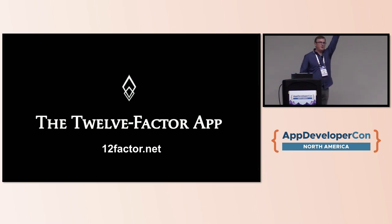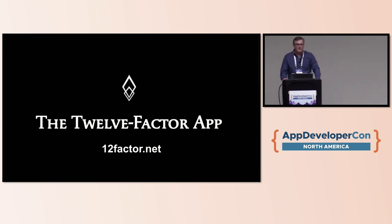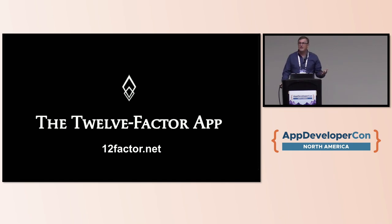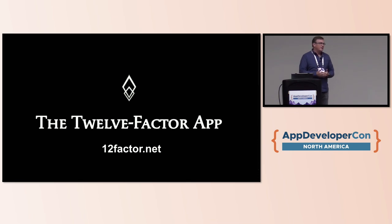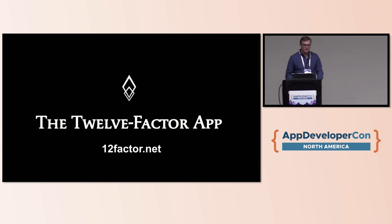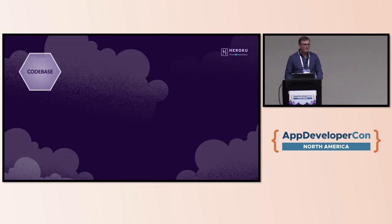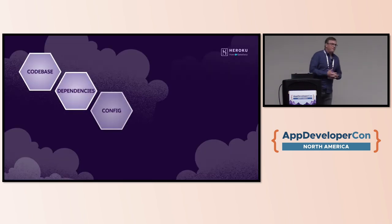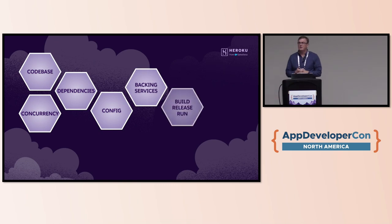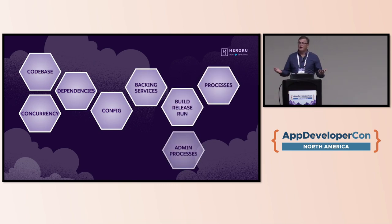How many of you are familiar with the 12-factor app? Raise your hand — have you seen it before? The 12-factor app manifesto was written more than a decade ago, in 2011, when one of the co-founders of Heroku, Adam Wiggins, decided to codify all of the best practices around creating applications that made it easy for developers to build in a way that they didn't have to worry about where their app was actually running. It's a series of 12 factors or principles that a developer can adhere to to accomplish these goals.